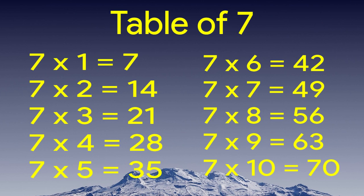7 times 8 equals 56. 7 times 9 equals 63. 7 times 10 equals 70.